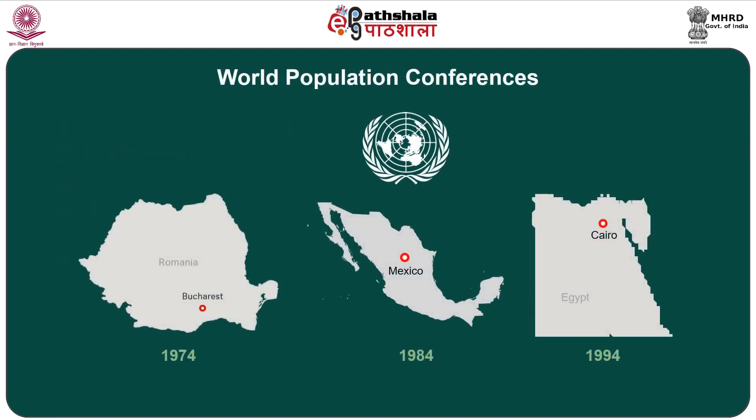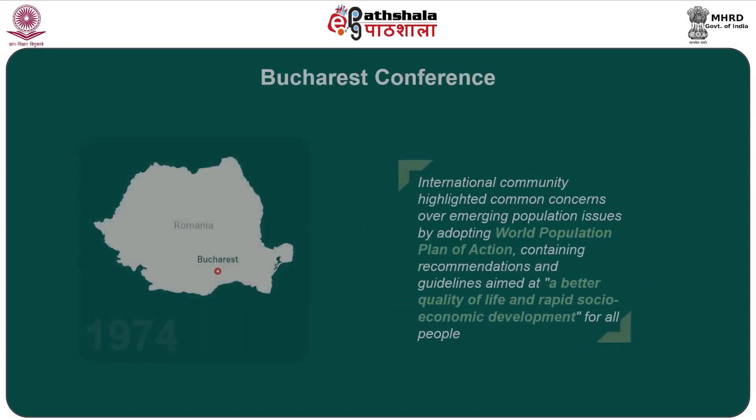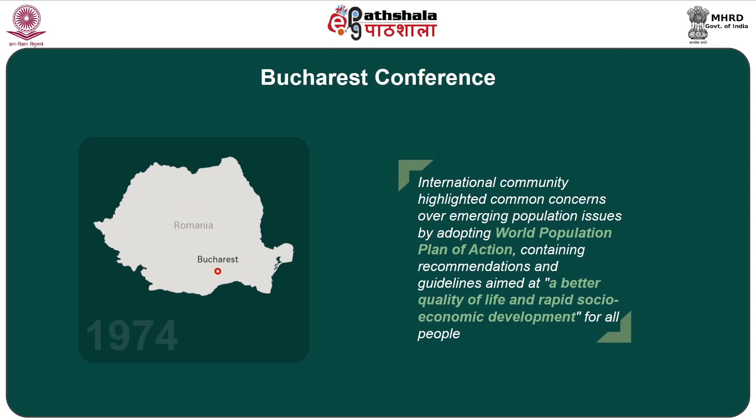The United Nations organized international or World Population conferences. In 1974, it was held at Bucharest. In 1984, it was held at Mexico City, and then in 1994, the ICPD conference was held at Cairo. The Bucharest conference was one of the three World conferences organized by the United Nations with specific focus on population.